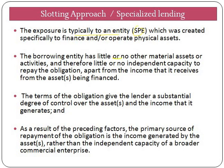Because of this, there is no independent capacity of the borrower to repay the obligation apart from the income generated from the assets financed by the bank. As a result, the primary source of repayment is only the income generated by these assets, and in such cases the bank has substantial control over both the asset and the income it generates.